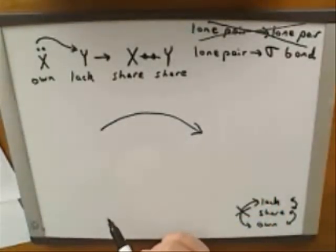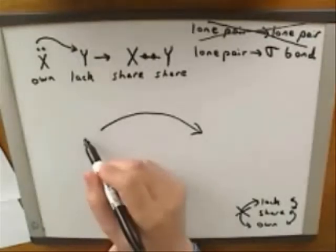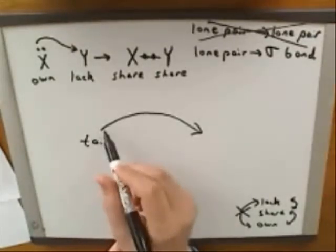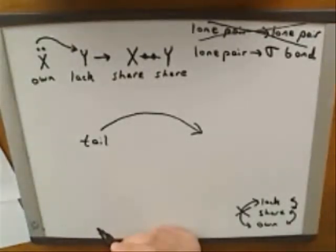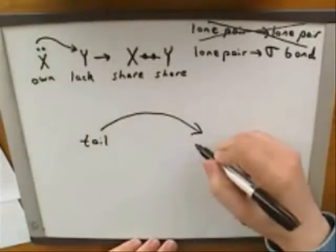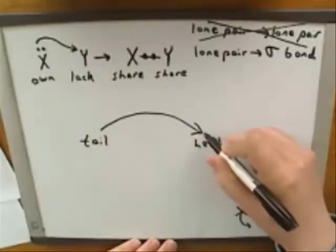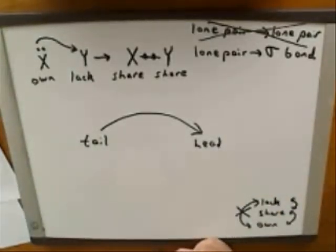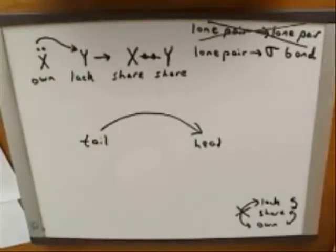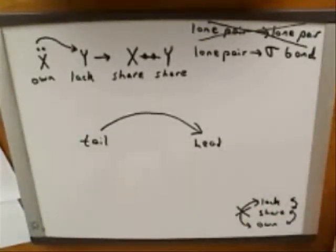So please label the tail of this arrow. I hope you can see that this is the end that we would consider the tail of the arrow. And what would be the head of the arrow? It's clear, I hope, that this is the head of that electron-pushing arrow. So please make a note, if you need to, that whenever I refer to the head or the tail of an arrow, this is the tail and this is the head.